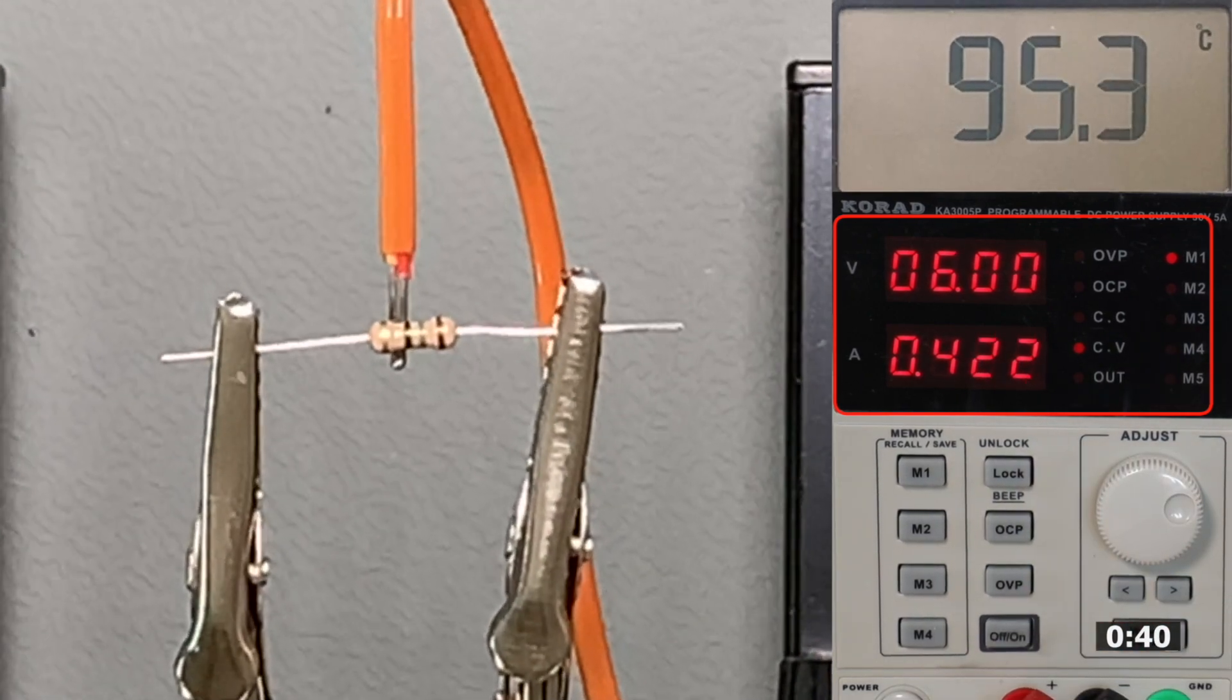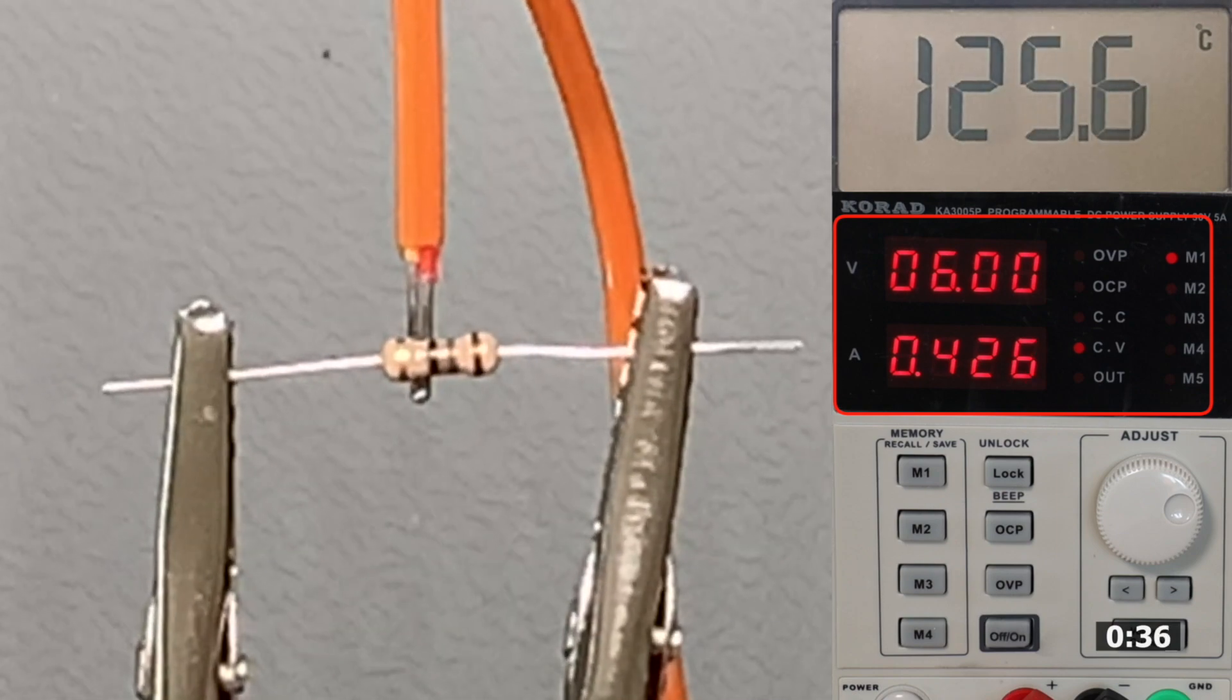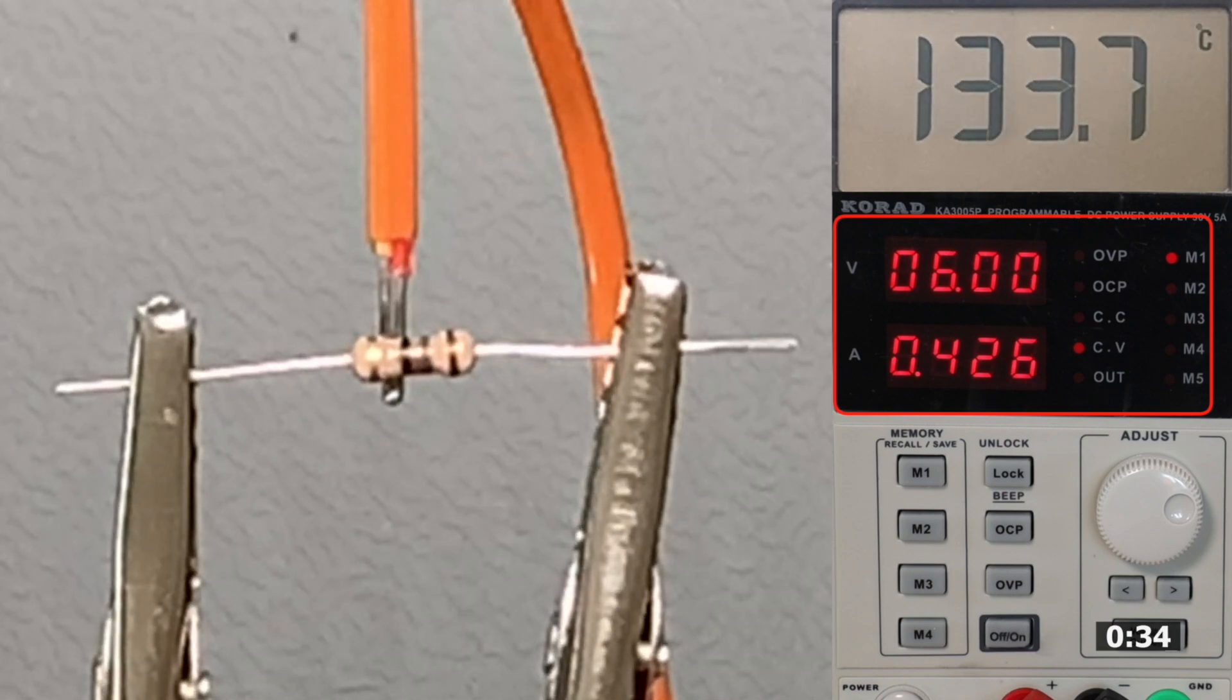At a level of 6 volts the power is already over 2.5 watts with a temperature of over 140 degrees centigrade at the resistor, which slowly starts to affect its structure. If you look closely you can already see a slight discoloration and some smoke rising up from the resistor housing.